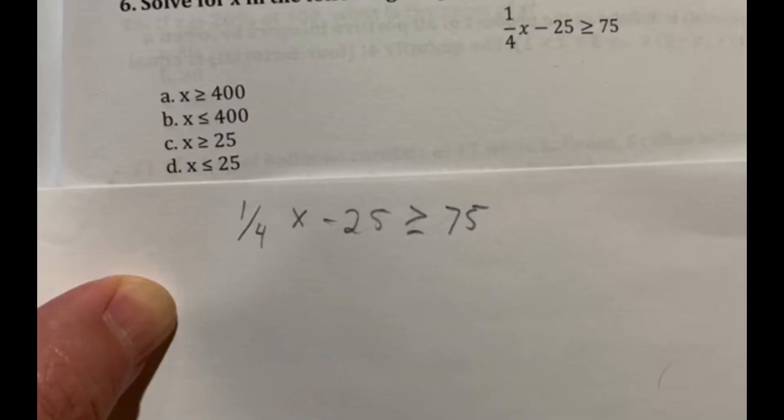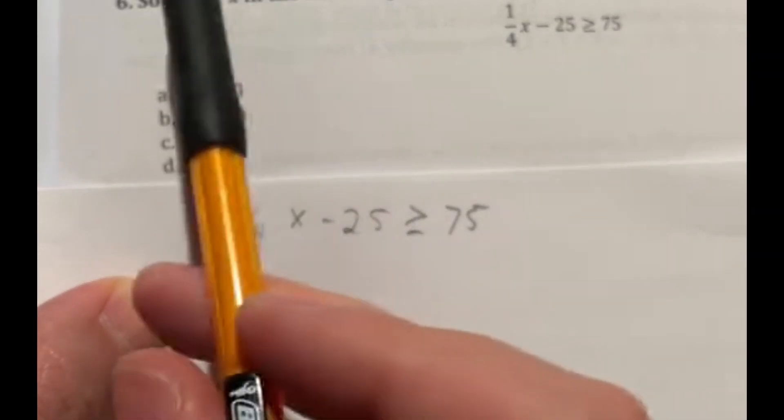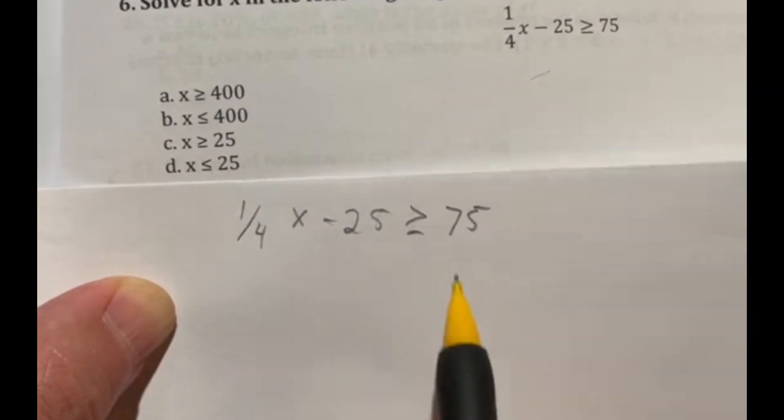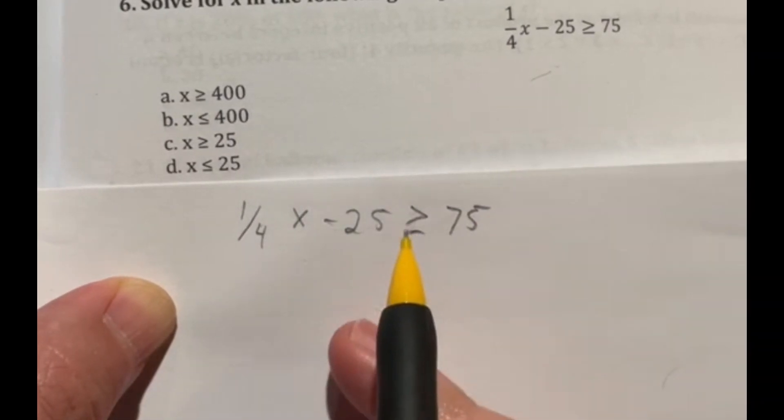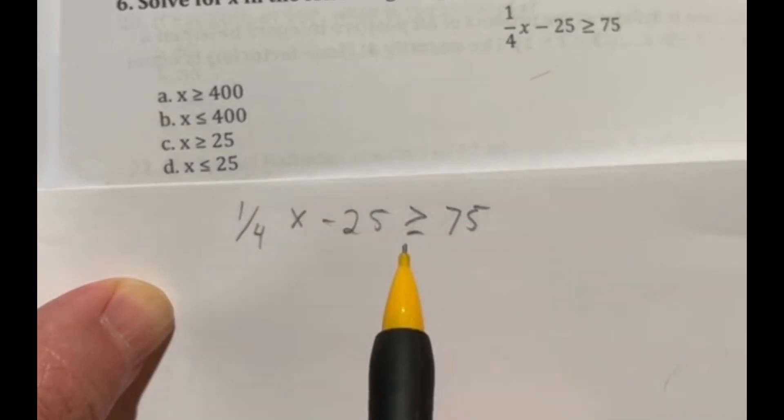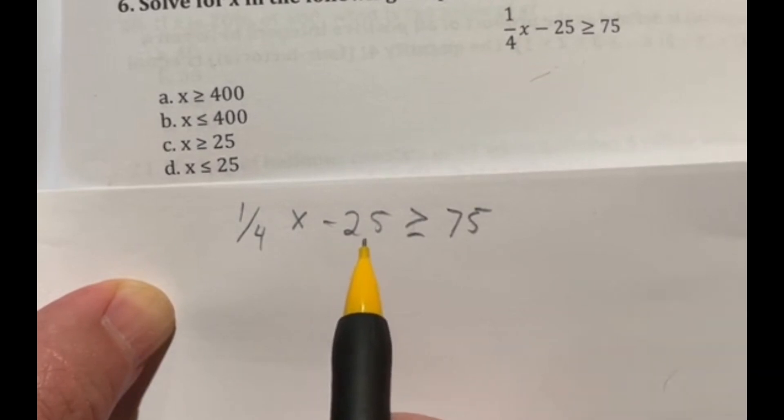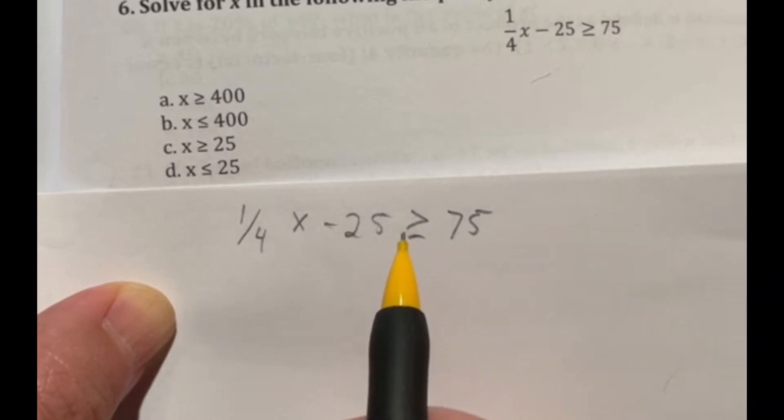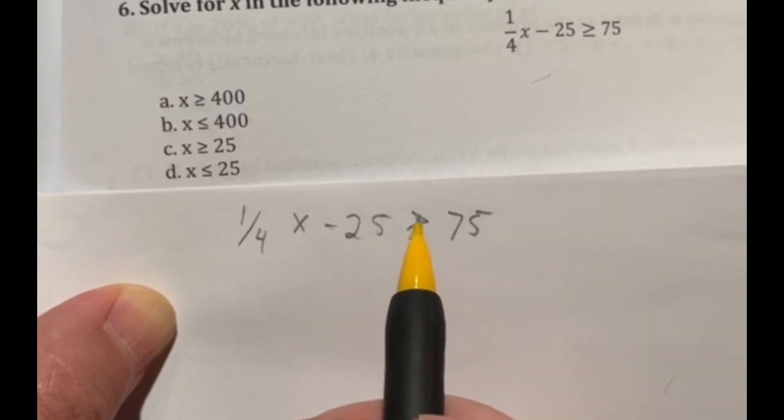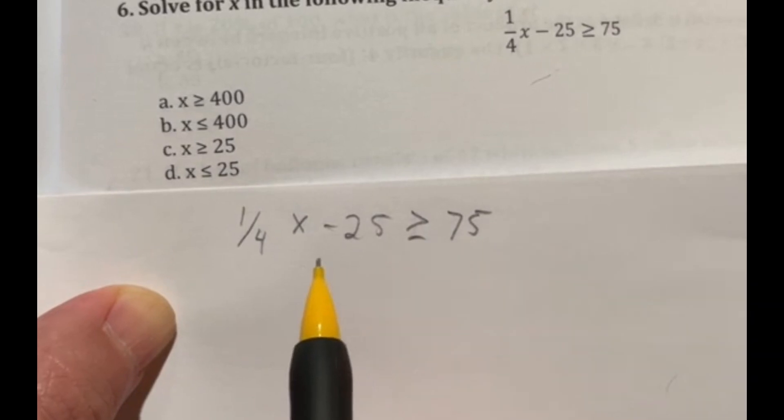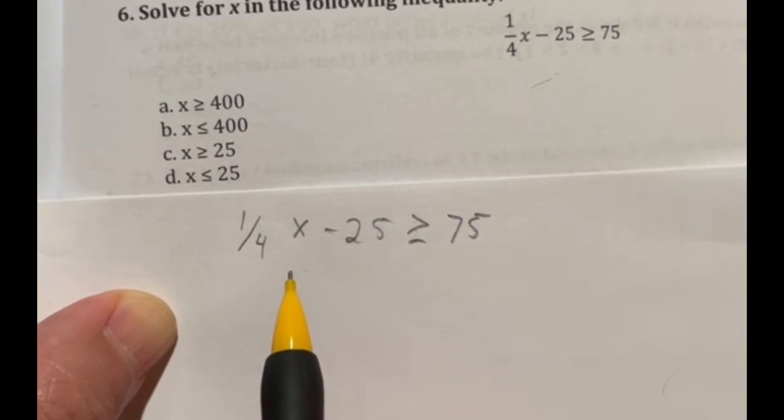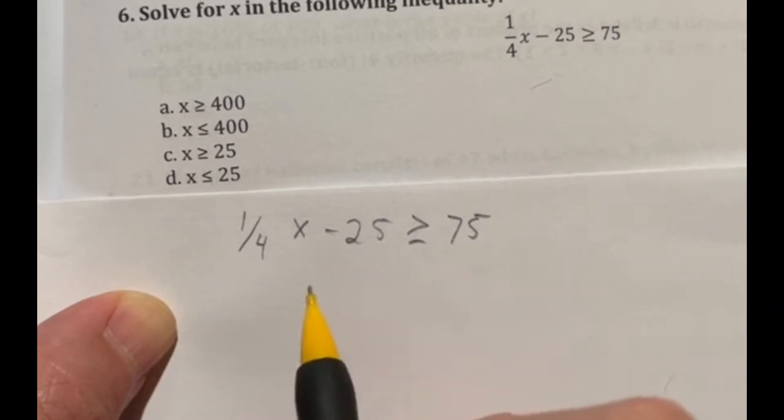So notice from number five to number six, we're switching between solving for an equation and solving for an inequality. So that just means that we don't have an equal sign in between. But in reality, it's treated the exact same way. There's only one major rule that changes. And that's if you multiply or divide by a negative number, then you have to flip this sign in the other direction. But I don't think we'll have to do that here because I'm not seeing any signs of us multiplying or dividing by a negative number. Let's go ahead and take a look.